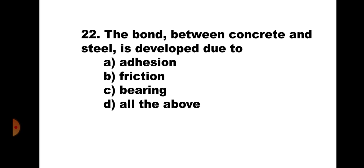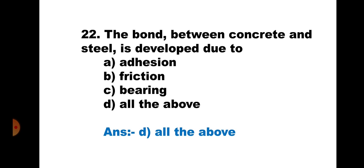Question 22. The bond between concrete and steel is developed due to: A. Adhesion, B. Friction, C. Bearing, and D. All the above. Adhesion is the attraction between particles of different materials. The bond developed between steel and concrete is due to all three — adhesion, friction, and bearing. Hence, the correct answer is D. All the above.